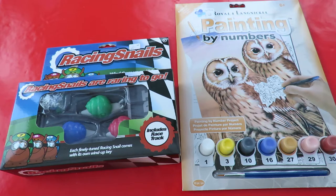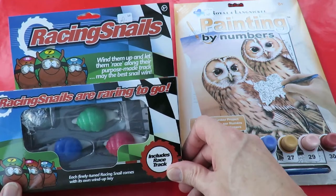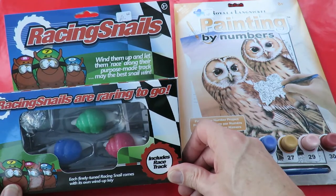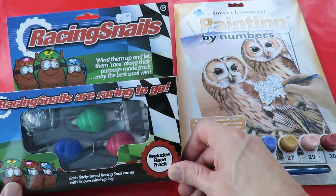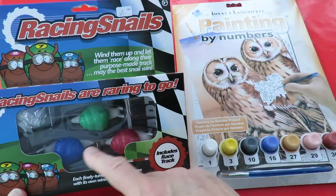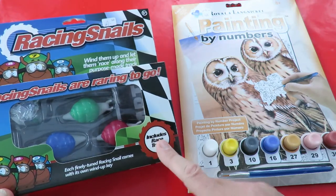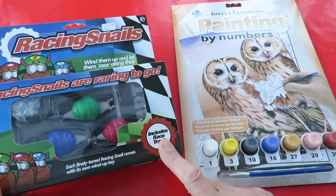So what have we got Grandad? Racing snails, little clockwork wind-up racing snails. Cost me a pound, looks like there's three of them. Includes racing track so we'll set that up in a minute and try it out.